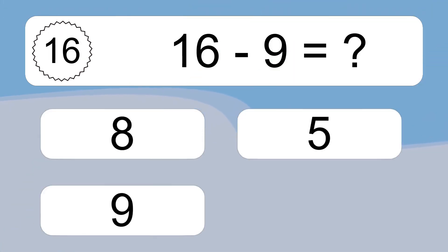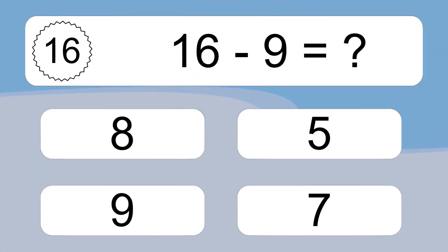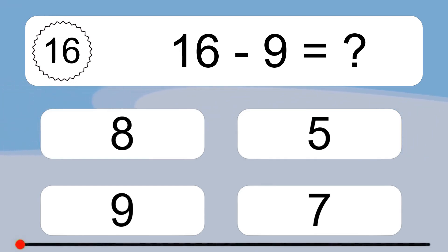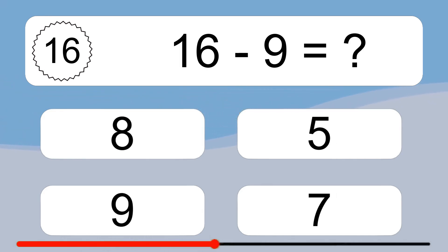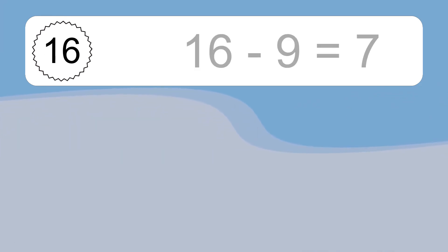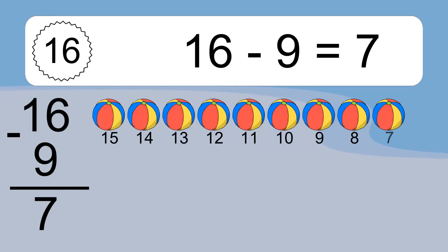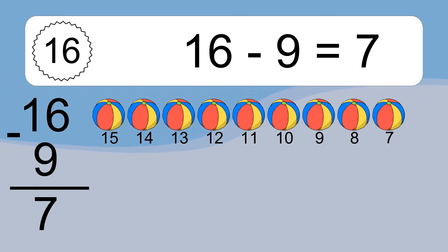16 minus 9 equals what? 16 minus 9 equals 7. Let's count it: 15, 14, 13, 12, 11, 10, 9, 8, 7.